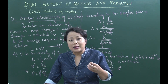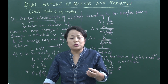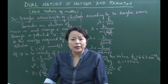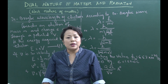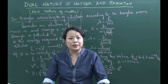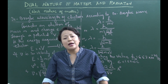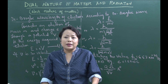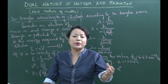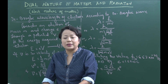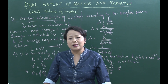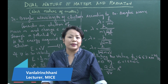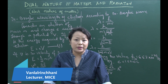To conclude: radiation exhibits both wave nature and particle nature. This is the wave of radiation, and this is the particle nature. The dual nature of matter and radiation — both wave and particle behavior — is the central theme of this chapter.